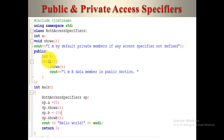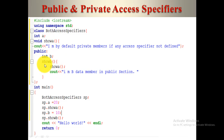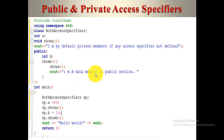In the public section we create a second variable B and a function showB. Inside showB we call showA, which is a private function. Can we call a private function inside another function of the same class? Yes, of course. And there is also a print statement: 'I am B, data member in public section'.